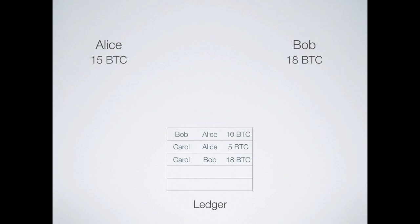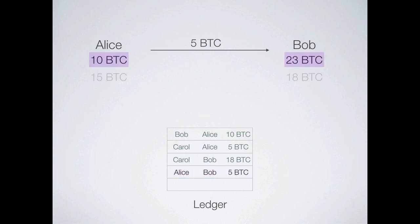Let's say Alice has 15 Bitcoin and Bob has 18 Bitcoin, and Alice wants to send 5 Bitcoin to Bob. What she does is report that to the person maintaining the ledger. That gets added to the ledger. If you comb through the ledger, you see Alice had 15 Bitcoin and sent 5 out, so she's left with 10. Bob had 18 and receives 5, so his balance is 23 Bitcoin. We can keep a running tally of what the actual balances are.